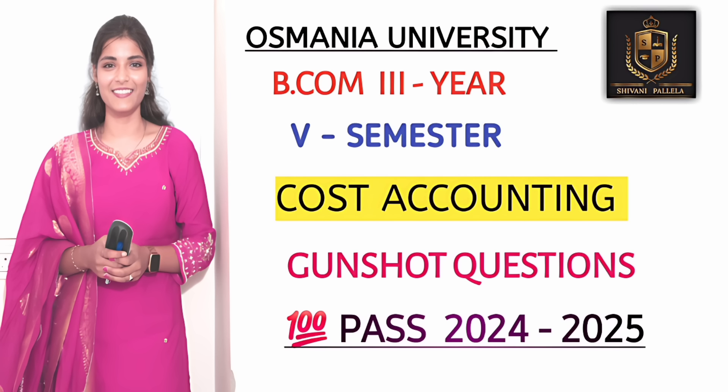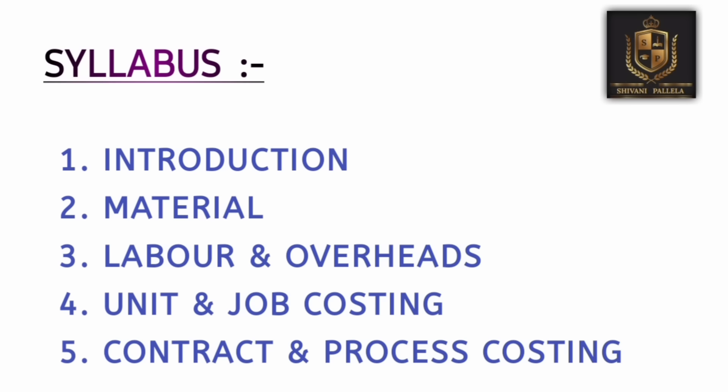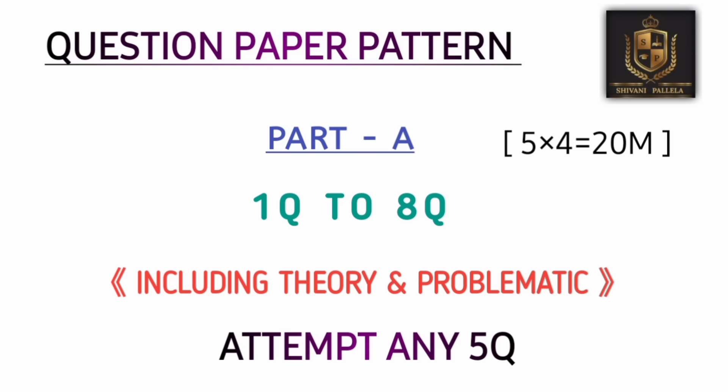Cost accounting is an easy subject in your semester five. Today in this video we will discuss every topic related to cost accounting, covering the entire syllabus. Coming back to the syllabus, you have a total of five units. Unit one is Introduction, unit two is Material, unit three has two chapters — Labor and Overheads, unit four has Unit Costing and Job Costing, and unit five has Contract Costing and Process Costing. Units three, four, and five each have two chapters.